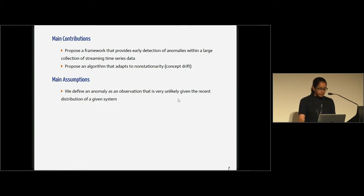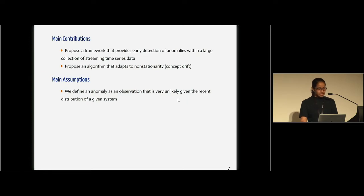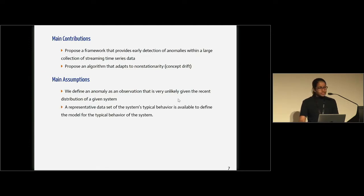In this proposed algorithm, we have two main assumptions. The first one is related to the definition of an anomaly. Here, we define an anomaly as an observation that is very unlikely given the recent distribution of a given system. Basically, we are defining an anomaly with respect to density.